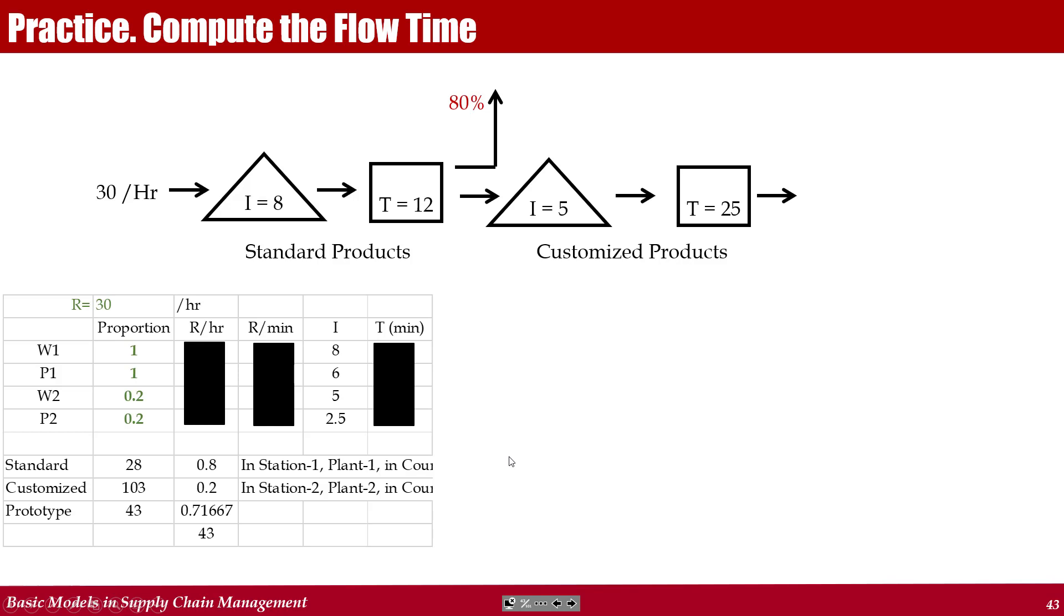Look at this problem. 30 products per hour come in. We have two types of products: standard products and customized products. You may assume that these products are built in two stations, two plants, two countries. No matter what the practical instantiation is, the process will remain the same.